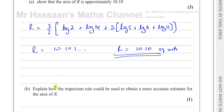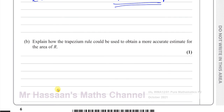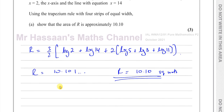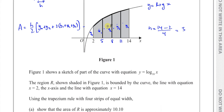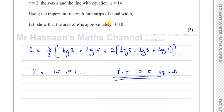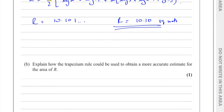Part B says: explain how the trapezium rule could be used to obtain a more accurate estimate for the area of R. If we were to increase the number of strips, the gaps that exist will get smaller and smaller. The gap between the top of the trapeziums and the curve will get less and less, and the accuracy greater and greater. So we can say: increasing the number of strips — that's how you make this more accurate.